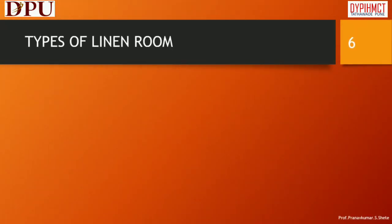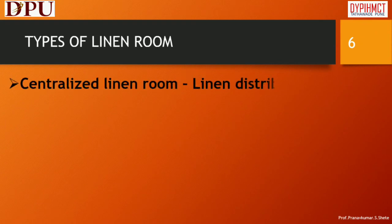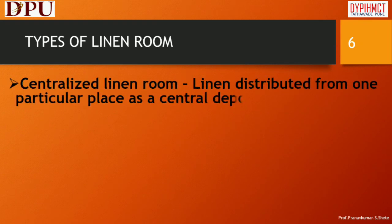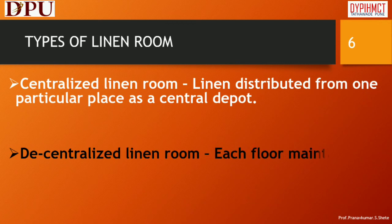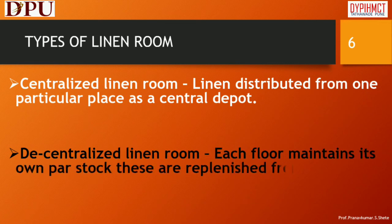Types of Linen Room. Centralized Linen Room: from here the linen is distributed throughout the hotel by using this as a central depot. Decentralized Linen Room: each floor maintains its own par stock, and these are replenished from one main linen room.